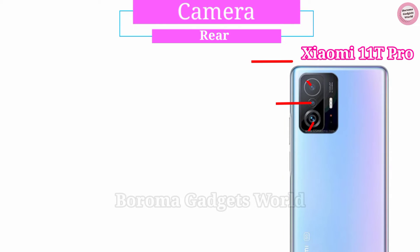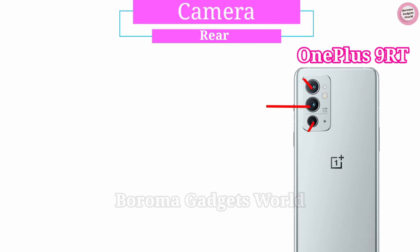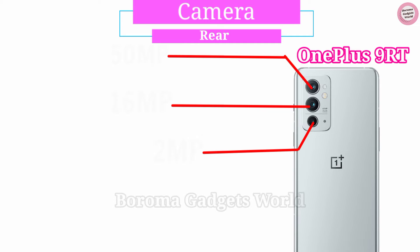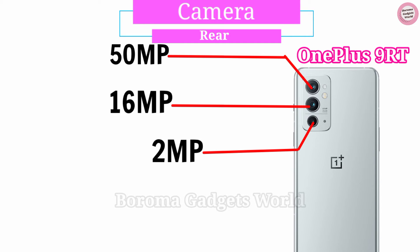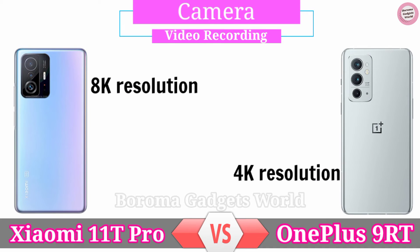For the rear camera, the Xiaomi 11T Pro is equipped with an impressive set: a primary 108MP Samsung HM2 sensor, an 8MP ultra-wide sensor, and a 5MP tele-macro unit. The OnePlus 9RT also features a triple camera setup with a primary 50MP sensor, a 16MP ultra-wide sensor, and a 2MP macro unit.